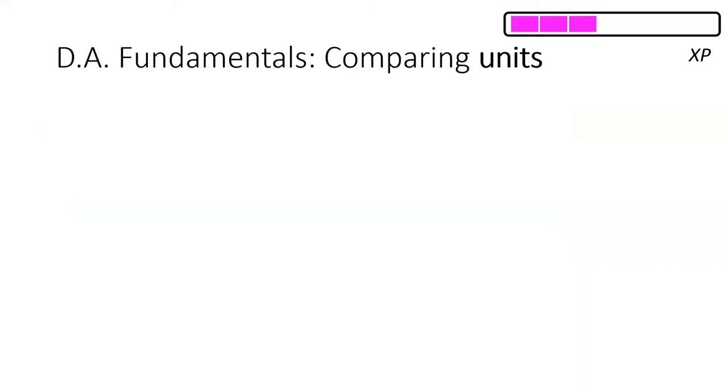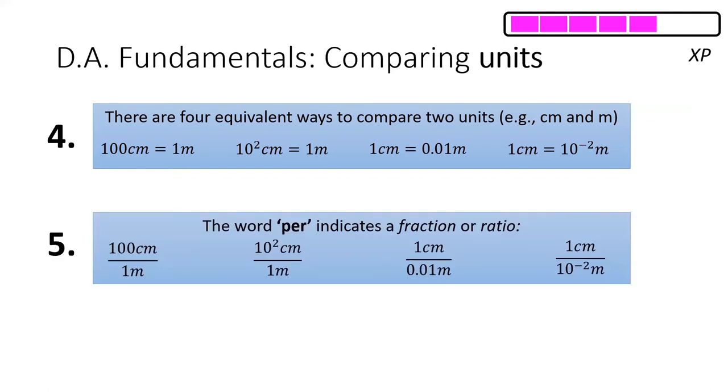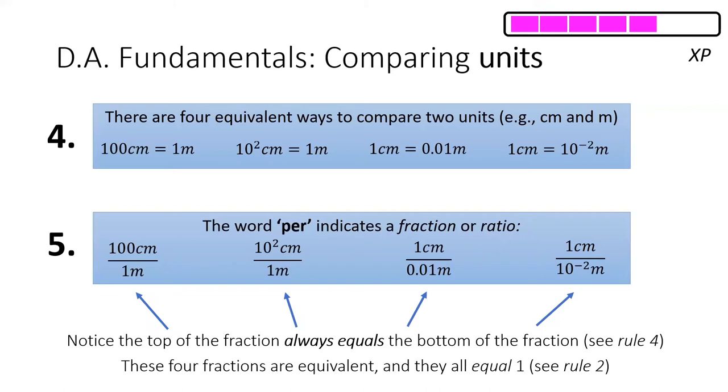Next, as I've said, dimensional analysis is a way to convert between units. Rule number four: there are many equivalent ways to compare two units. Scientists use metric units, which are often easier to represent by powers of 10. Rule five: the word per means that we're dealing with fractions. For example, there are 100 centimeters per meter, or equivalently, there is one centimeter per 0.01 meters. Notice that in each of these cases, the numerator equals the denominator for every one of these fractions. Therefore, rule two tells us that these fractions equal one.